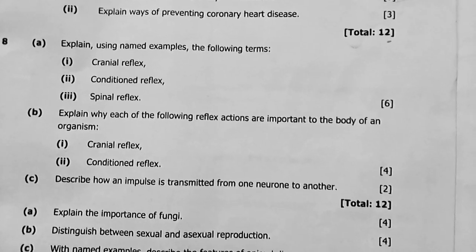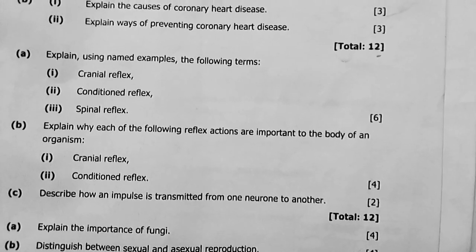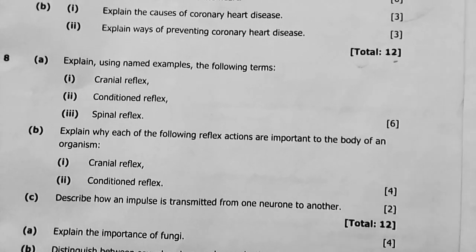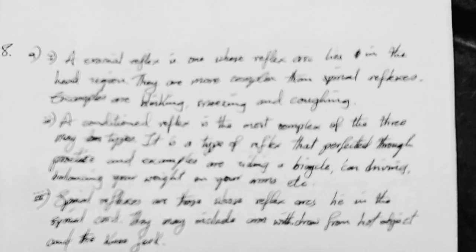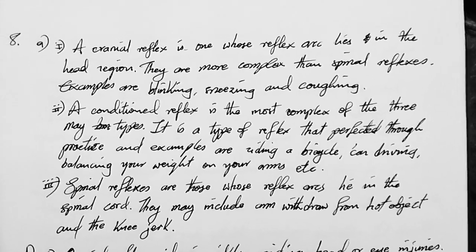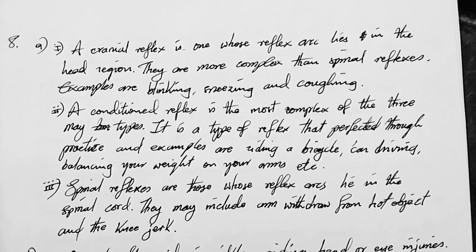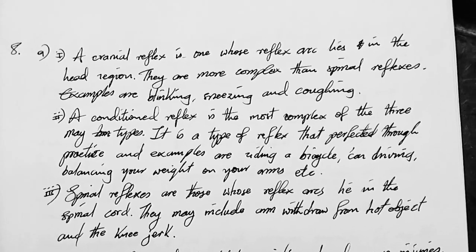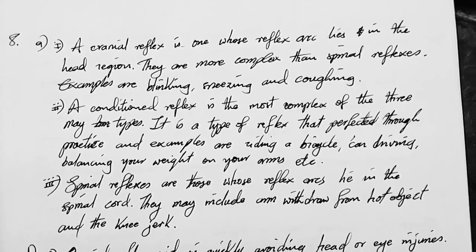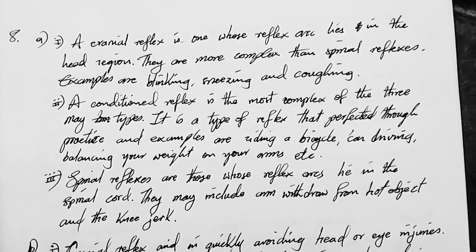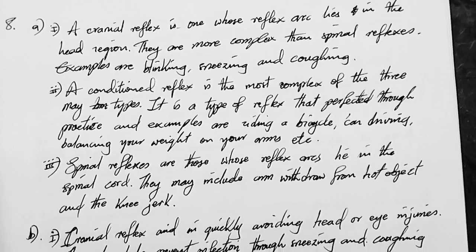Question 8a: explain using named examples the following terms — cranial reflex, conditioned reflex, spinal reflex. A cranial reflex is one whose reflex arc lies in the head region or in the brain. They are more complex than spinal reflexes. Examples are blinking, sneezing, and coughing.